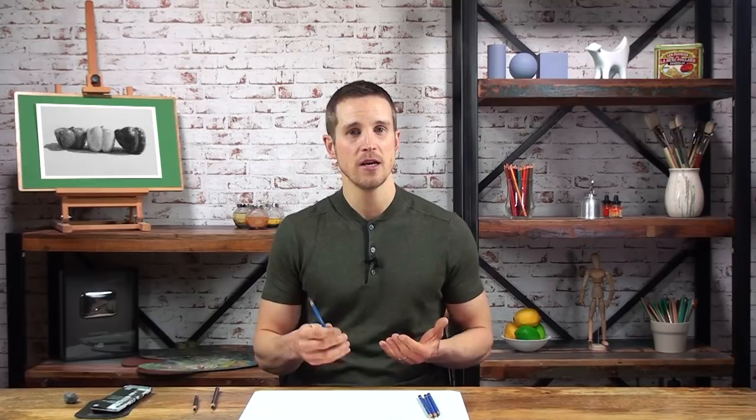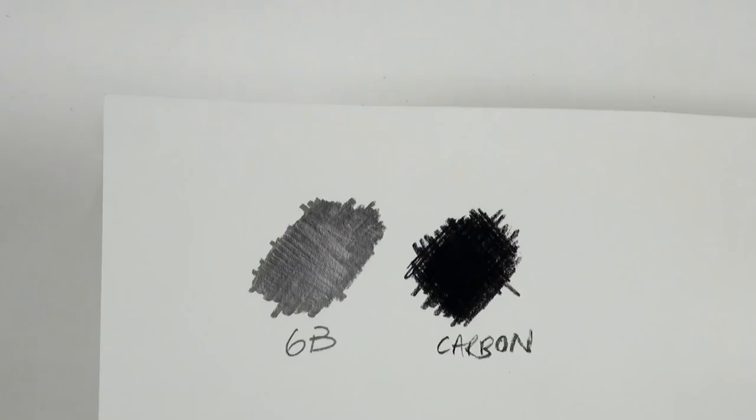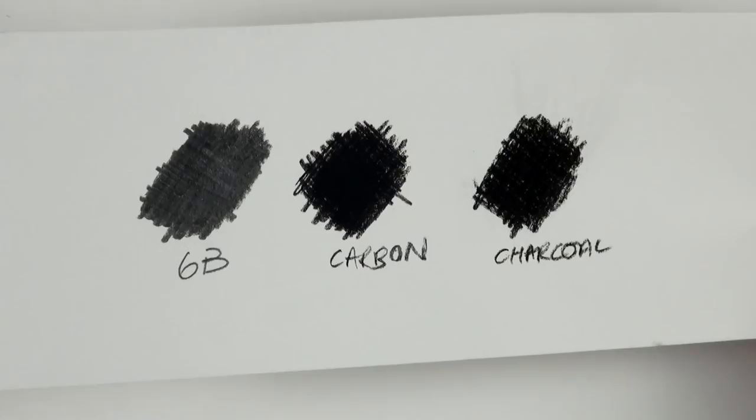Now the typical recommendation to avoid this graphite shine is to use a carbon or a charcoal pencil for those darkest values. This is a carbon pencil by Conte, and you can see I can use lots of pressure, and it stays jet black whatever angle we look at it. Just look at how that compares to the graphite.